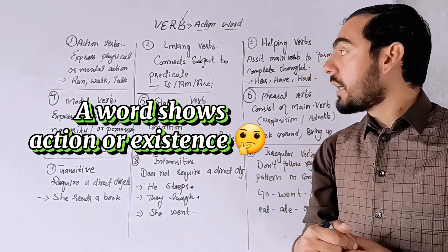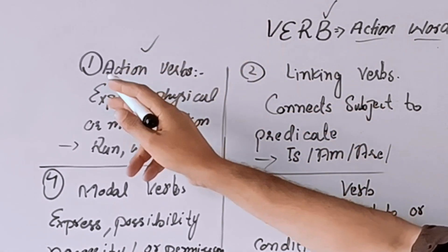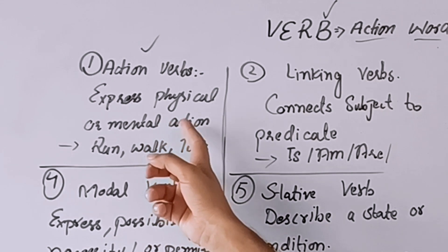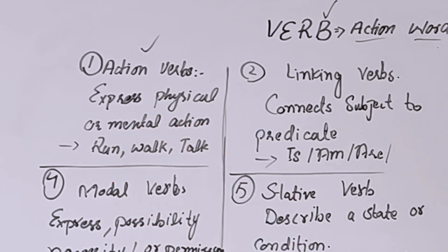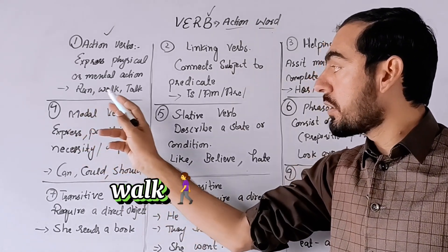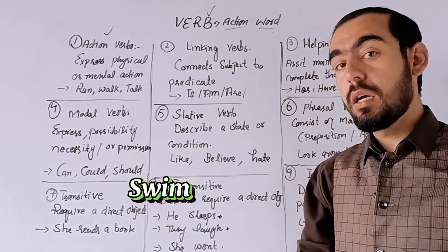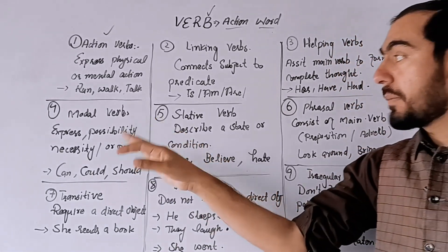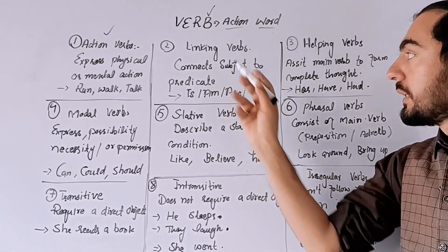Type number one: Action Verbs. Action verbs وہ verbs ہوتے ہیں جو کسی subject یا object کا physical یا mental action شو کراتے ہیں — جیسے run، walk، talk، swim، go، dance. These are some of the common examples of action verbs.